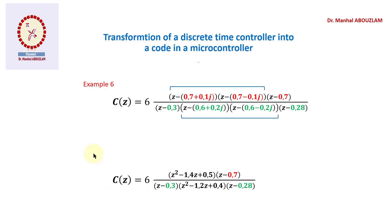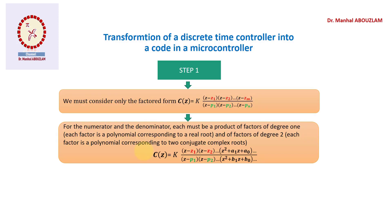We can take another example where we have two complex conjugate roots and another pair of two complex conjugate roots. For this considered form we have here a polynomial of degree two and another polynomial of degree two corresponding to each pair of complex conjugate roots.